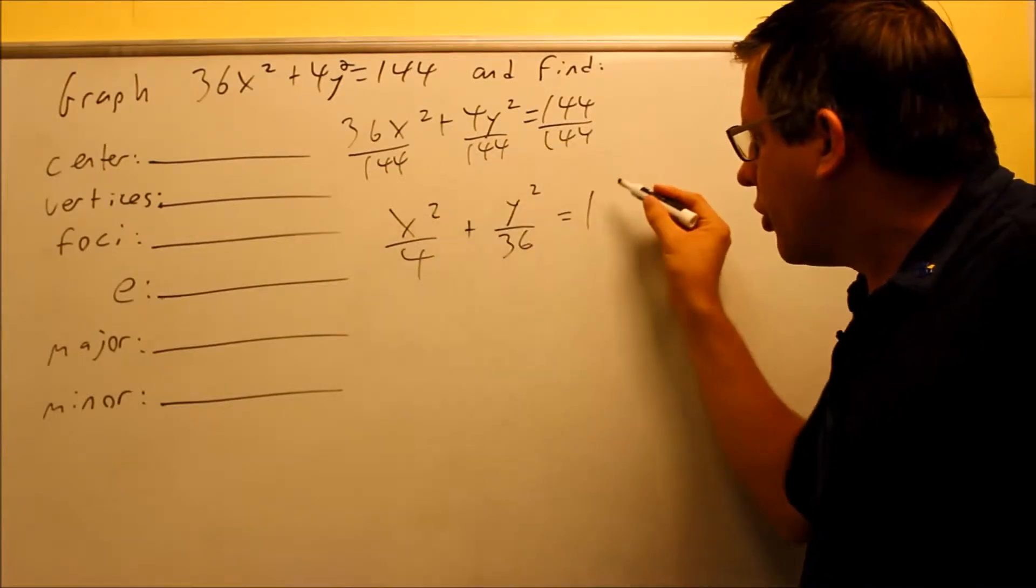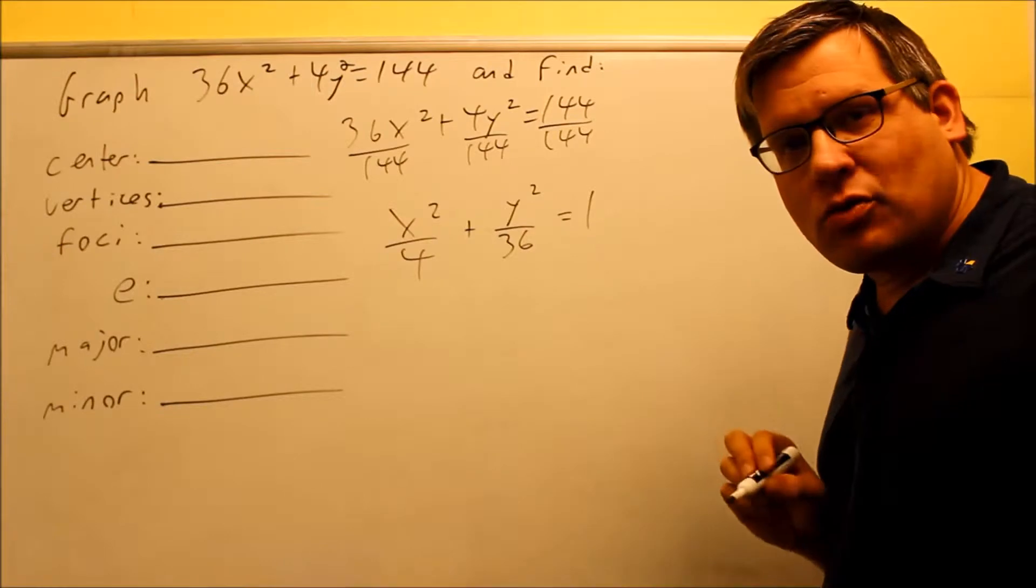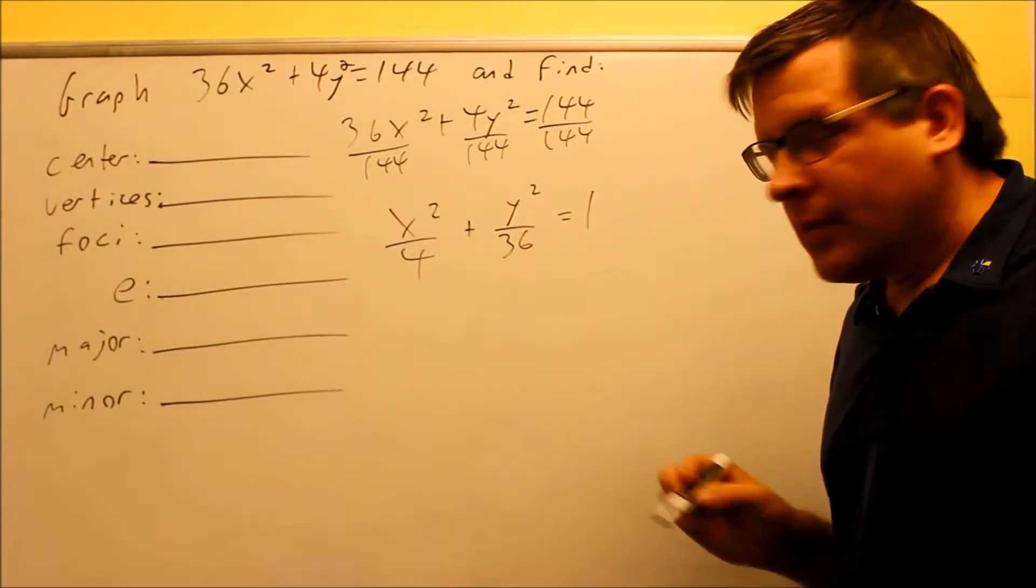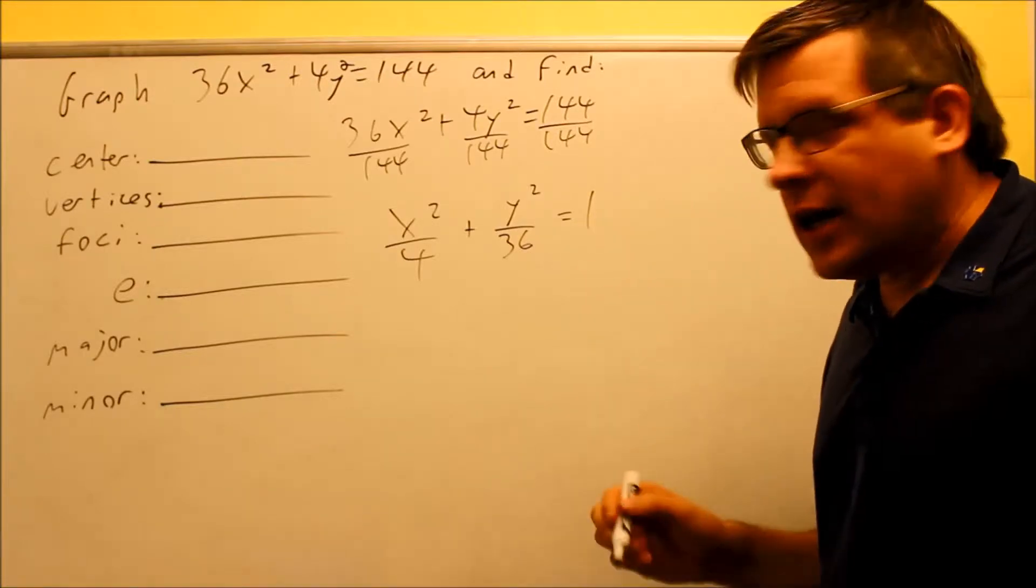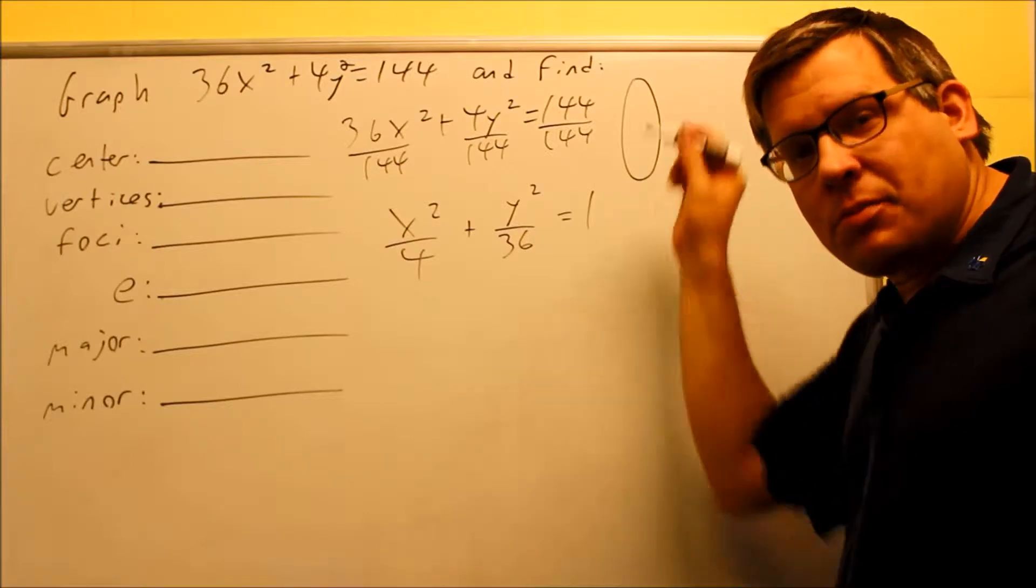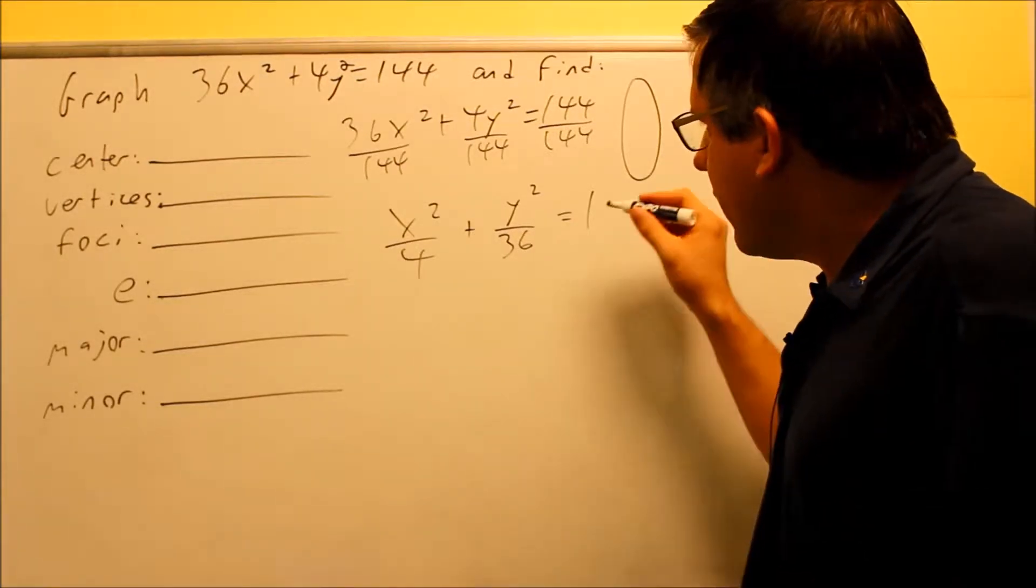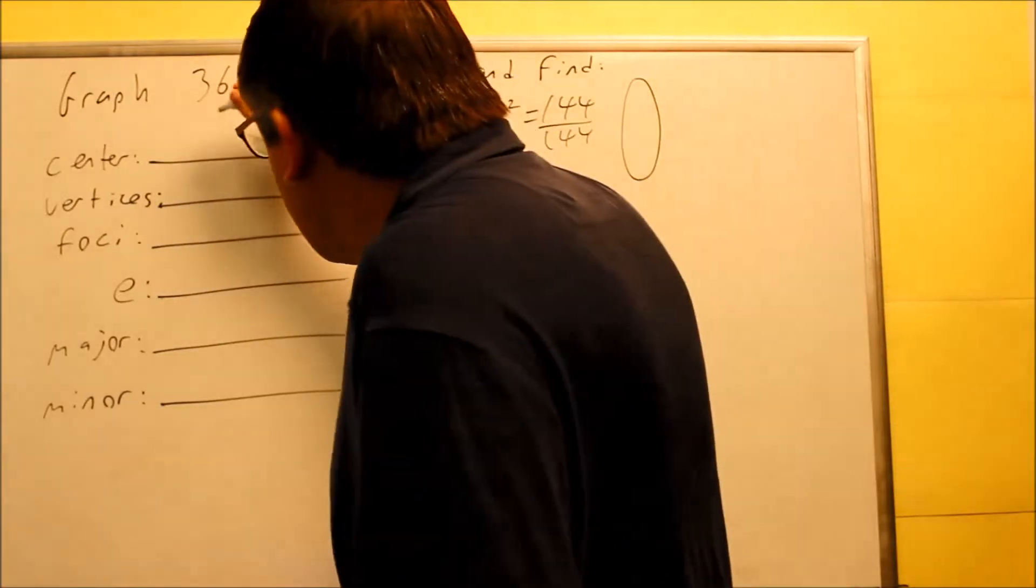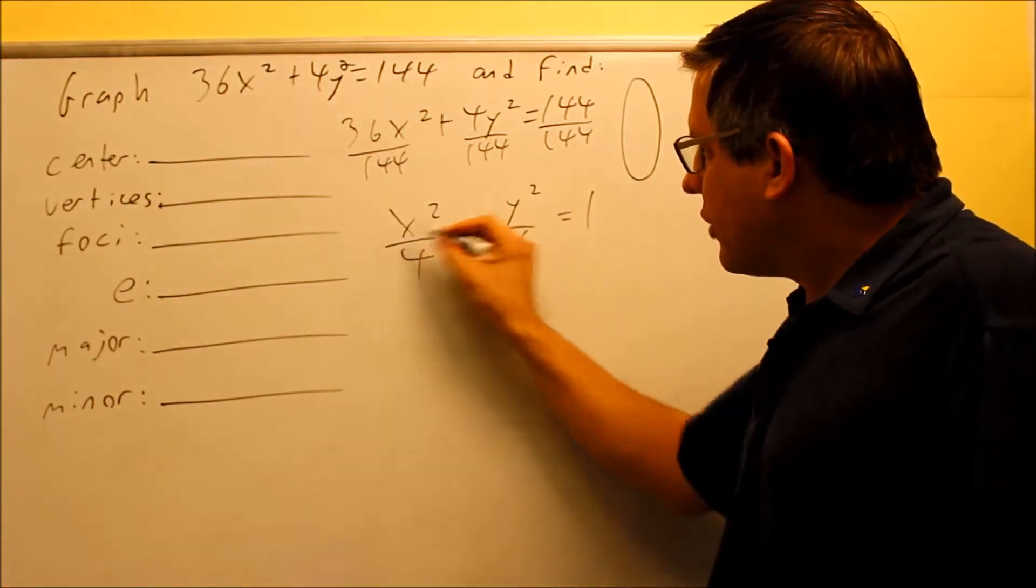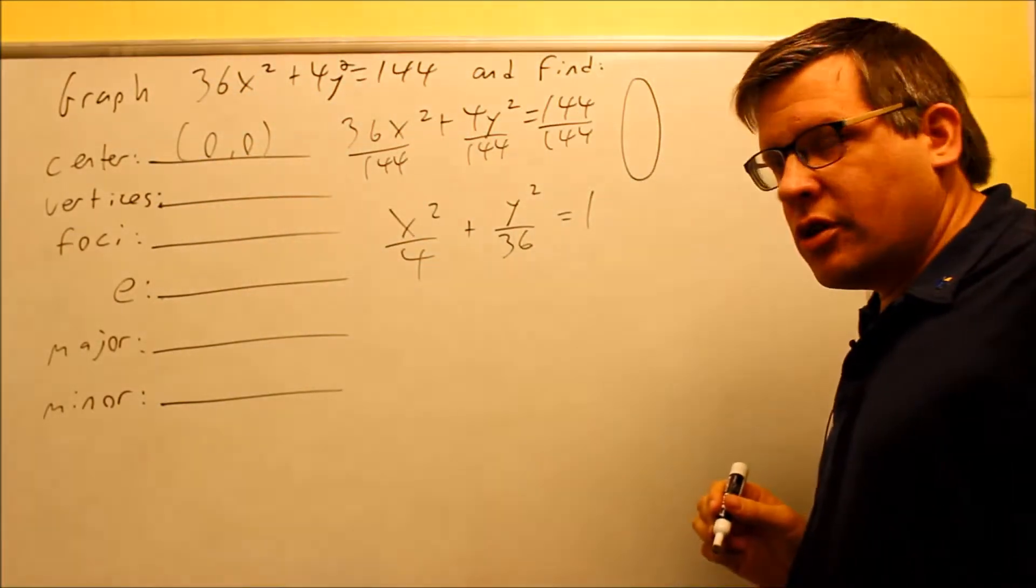So this is now the correct form because now we have a 1 after the equal sign. What we notice about this one is the larger number is underneath the y. So if the larger number is underneath the y, that means we have an ellipse that opens, goes up and down in the y direction. So now that we have that one, we're ready now to answer the questions here. We don't have any parentheses around the x and the y, so because of that, we know that it's once again going to be centered at 0, 0.